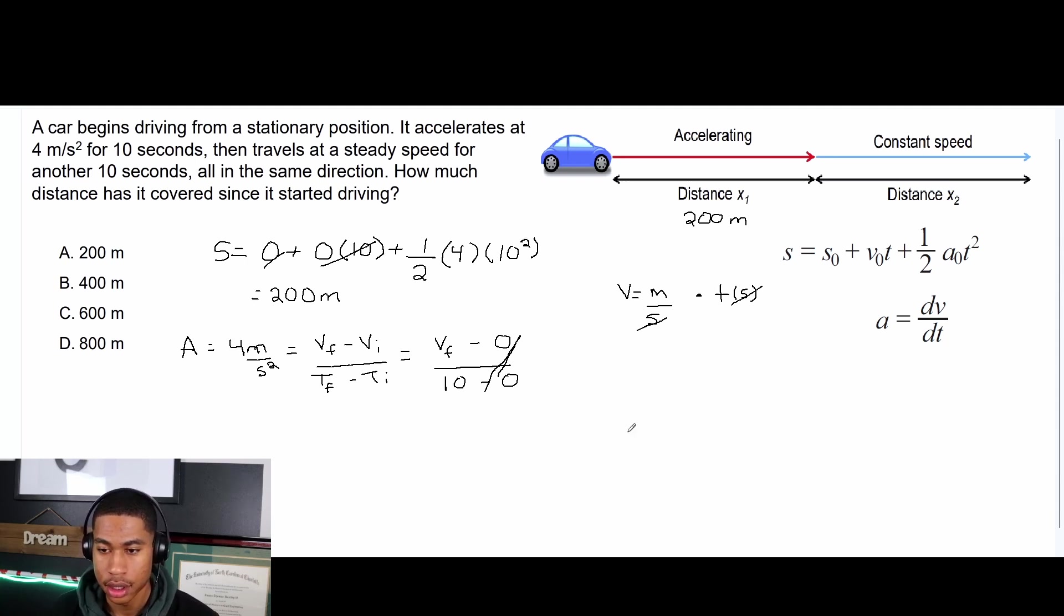So now all we need is to multiply by 10 and we'll get our v final. So this is equal to four meters per second squared. So 10 times 4, so 40 meters per second is equal to the v final. We know at the end of it accelerating its final velocity is 40 meters per second.